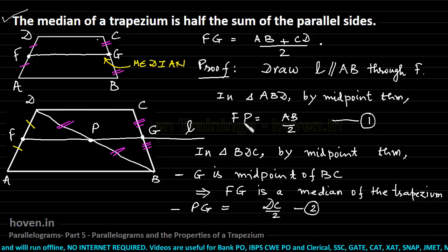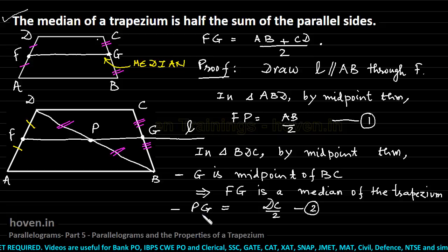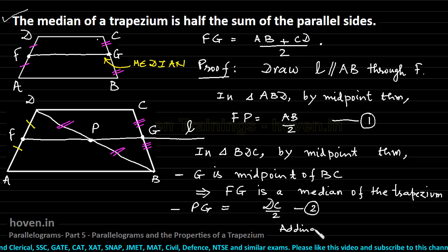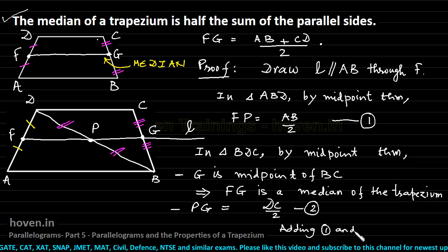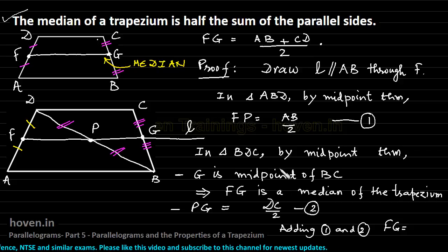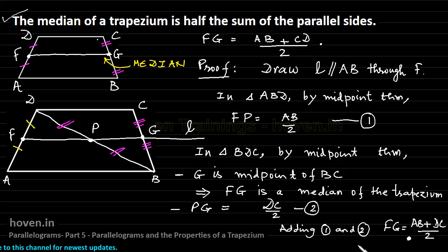Now, adding equations 1 and 2, the left side gives FP plus PG, which equals FG. The right side gives AB/2 plus DC/2, which equals (AB + DC)/2. This proves the theorem that FG, the median of the trapezium, equals half the sum of the parallel sides.